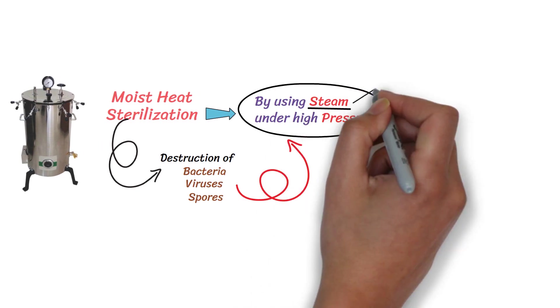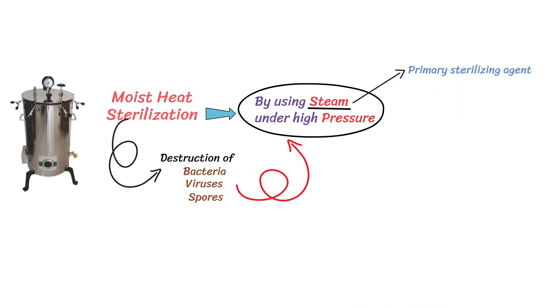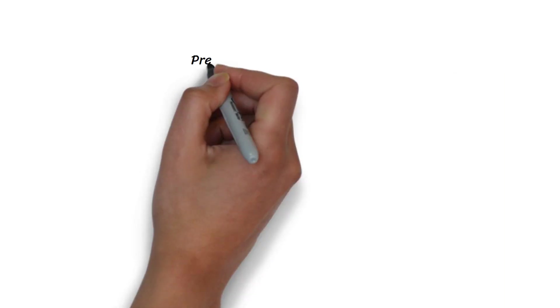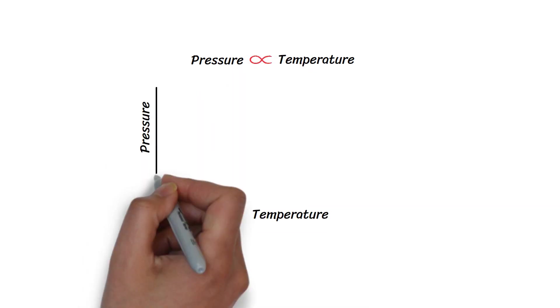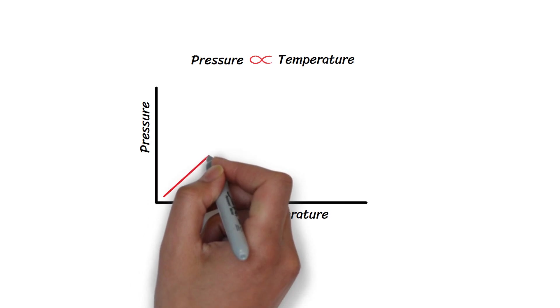Steam is the primary sterilizing agent in an autoclave. As we know that the pressure and temperature are directly proportional to each other, which means as the pressure increases, the temperature also increases.